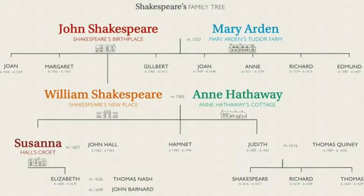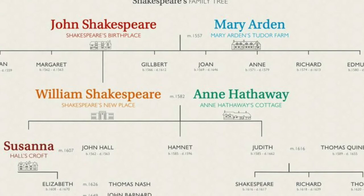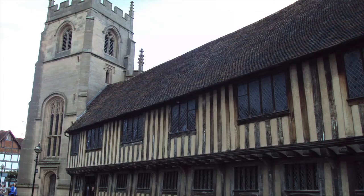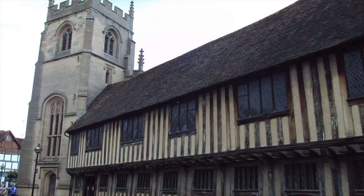His parents were John Shakespeare, who was a glove maker and a high-ranking councilman, and Mary Arden, who was the daughter of wealthy farmers. He was John and Mary's third child, but William's older two siblings, both of which were girls, did not survive infancy, making William their eldest living child.